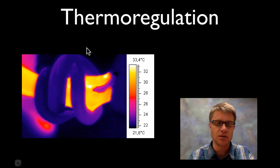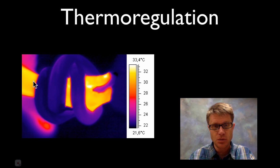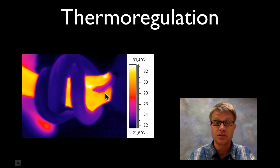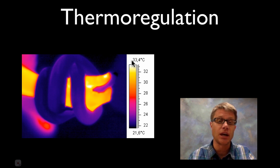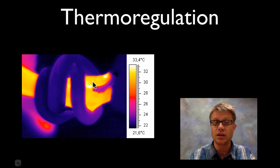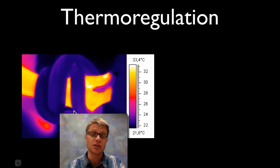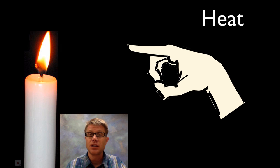This right here is a thermal image of a human arm holding onto a snake. This shows us the temperature — our internal body temperature is going to be around 37 degrees Celsius. What's the temperature of the snake? Well, the temperature of the snake is around room temperature, and that's because they're an ectotherm. So before we get to that, let's talk about heat.